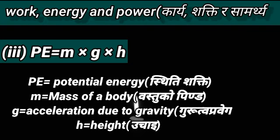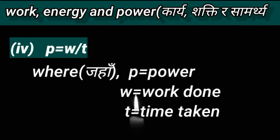Number four: P equals W by t, where P equals power, W equals work done, and t equals time. That's it for today.